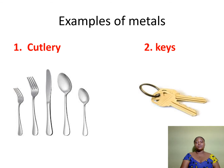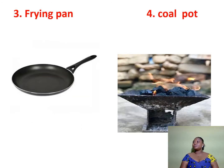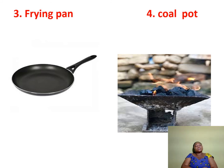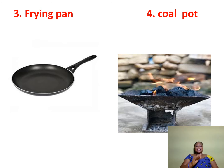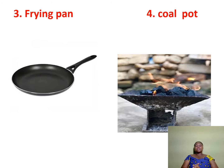Another example — the third example we have here is a frying pan. What do you use a frying pan for? We use it for frying egg. Sometimes mommy fries toasted bread and egg. The next one is a coal pot. We set fire in the coal pot, then you put your frying pan on it and it starts cooking.